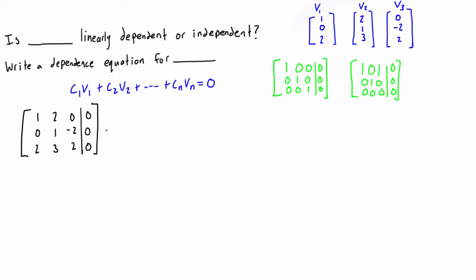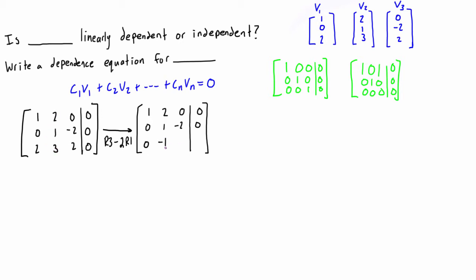Let's start the row operations. First, we want to turn the leading entry in row 3 into a zero, so we do r3 minus 2 times r1. The first two rows are unaffected. For row 3: 2 - 2(1) = 0, 3 - 2(2) = -1, 2 - 2(0) = 2, and 0 - 2(0) = 0.